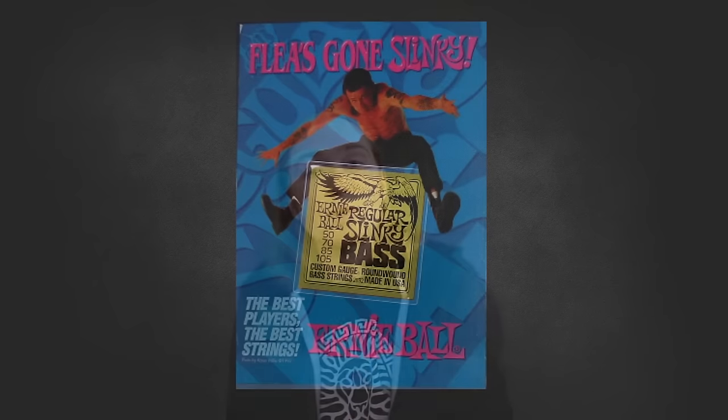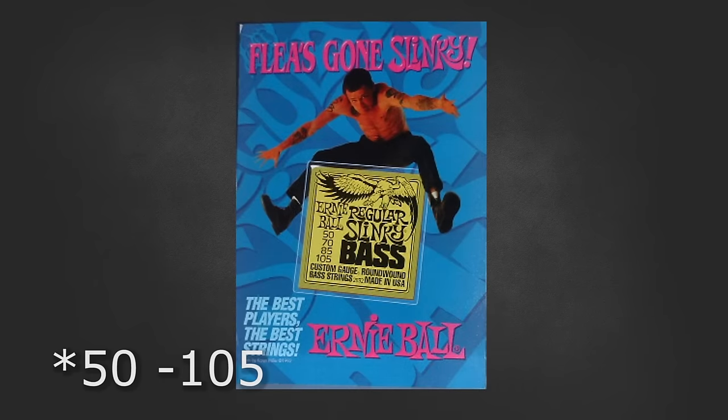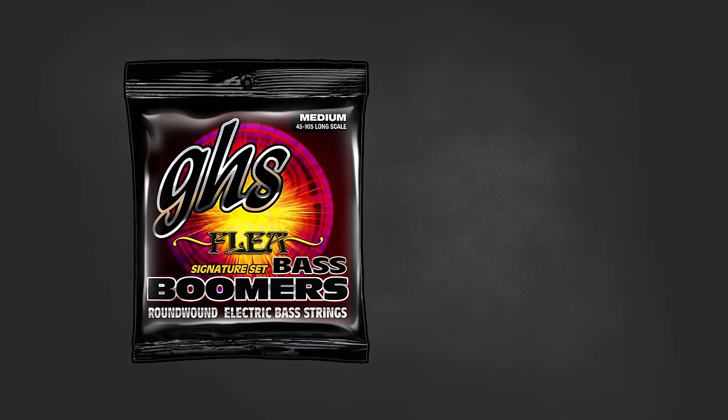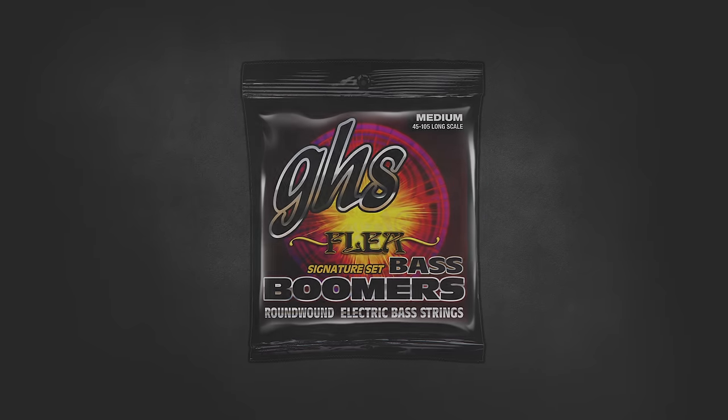Flea's strings are pretty straightforward. Early in his career he was using the Ernie Ball round wound slinkies 40-105. He then moved on to his own signature set GHS Boomers which have a special stainless steel and nickel plate combination.